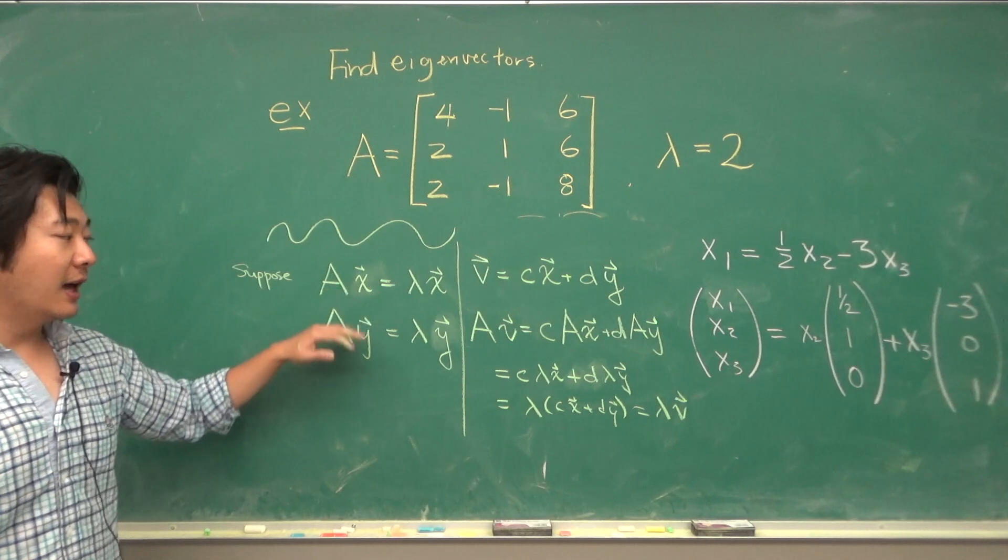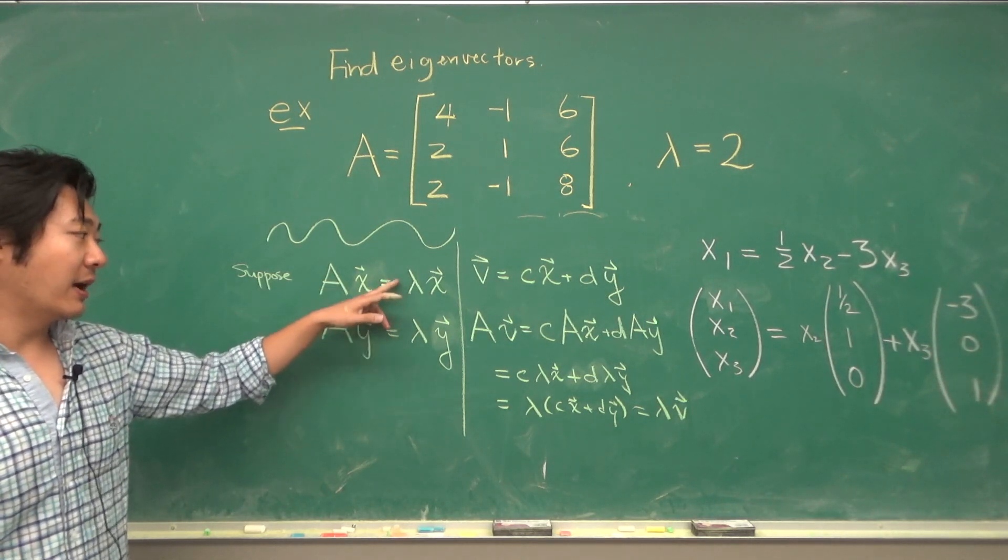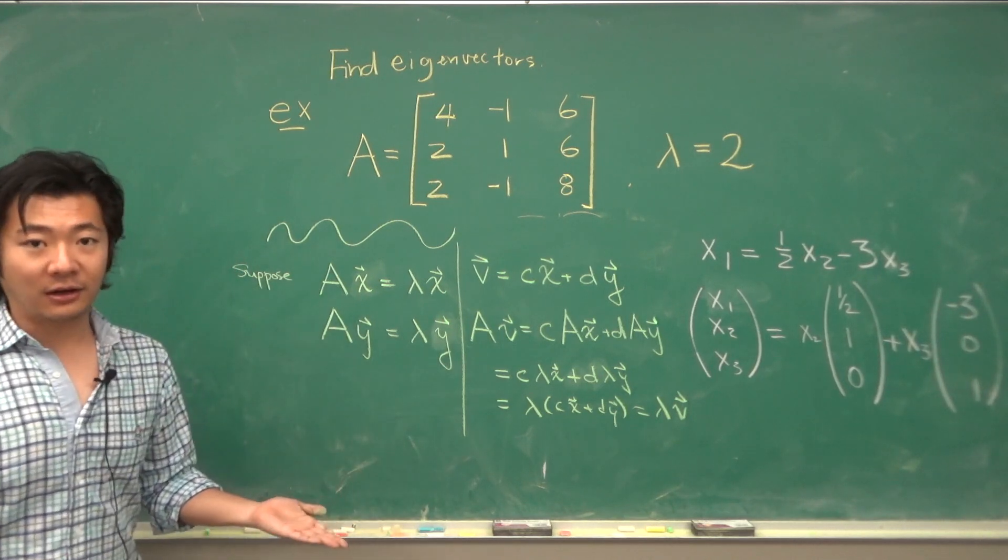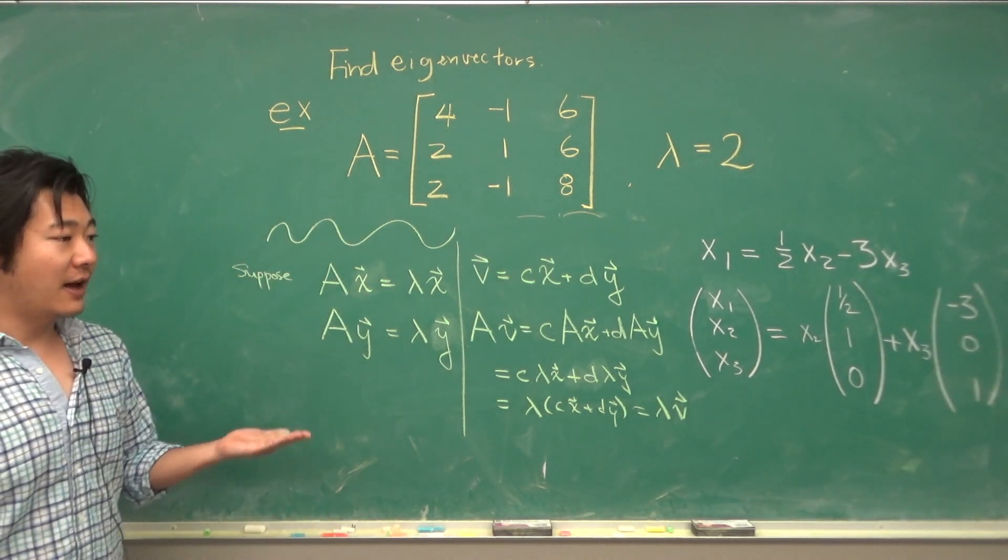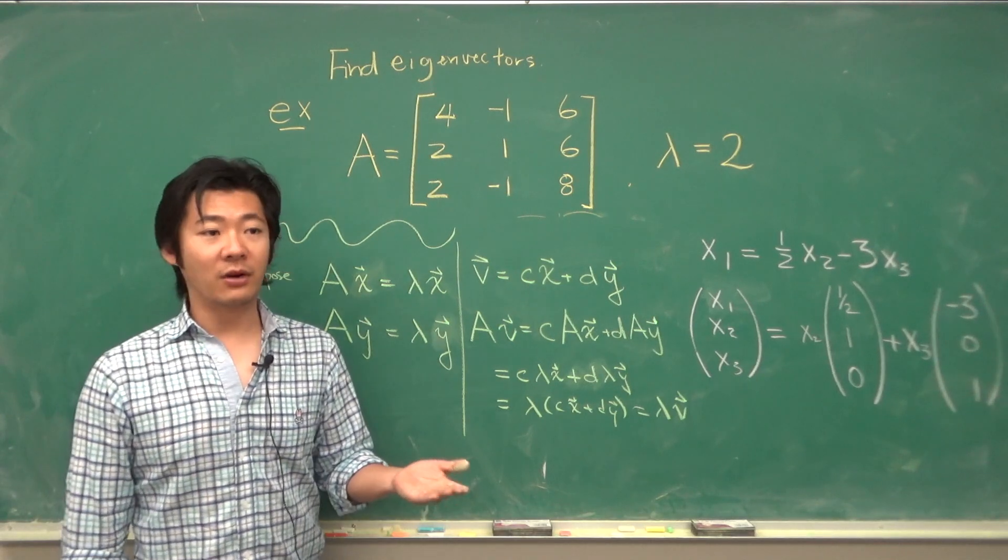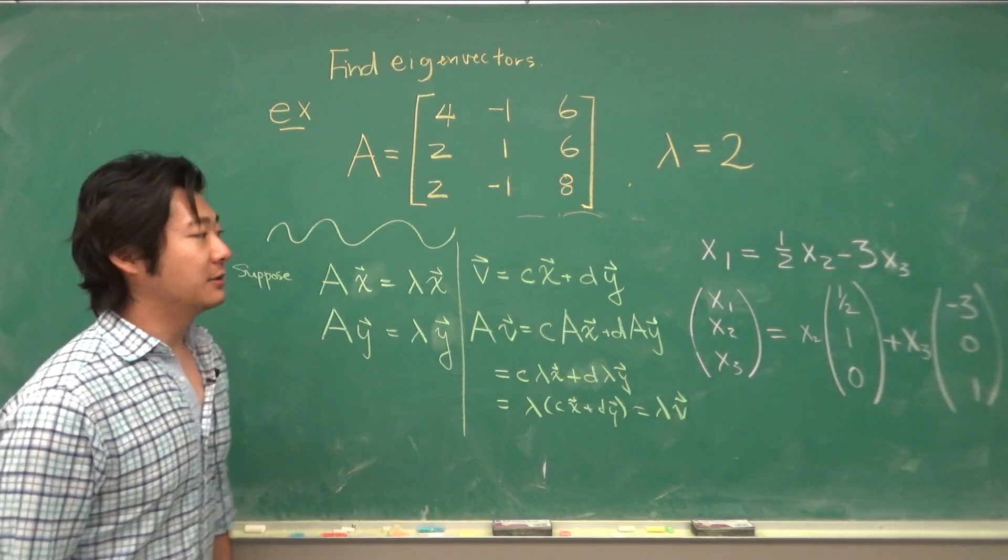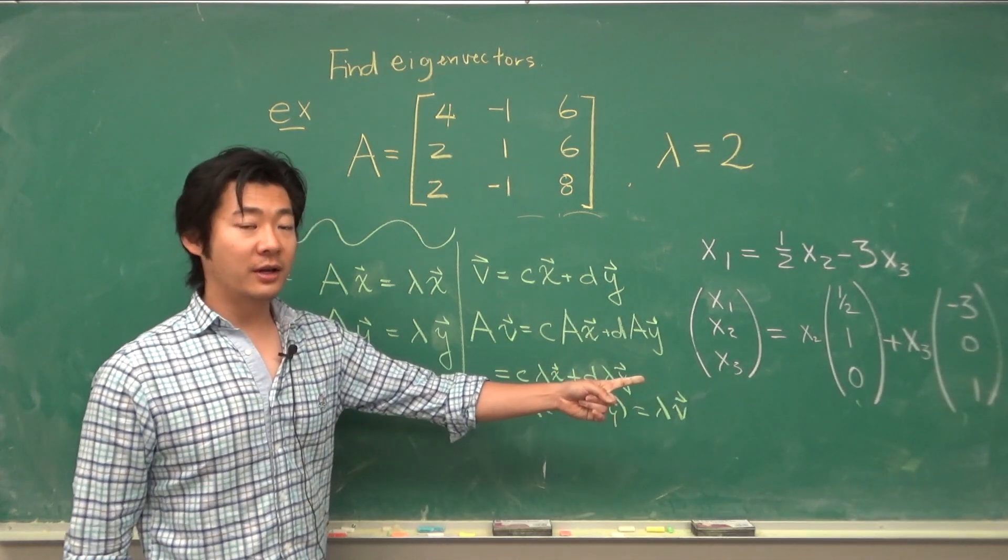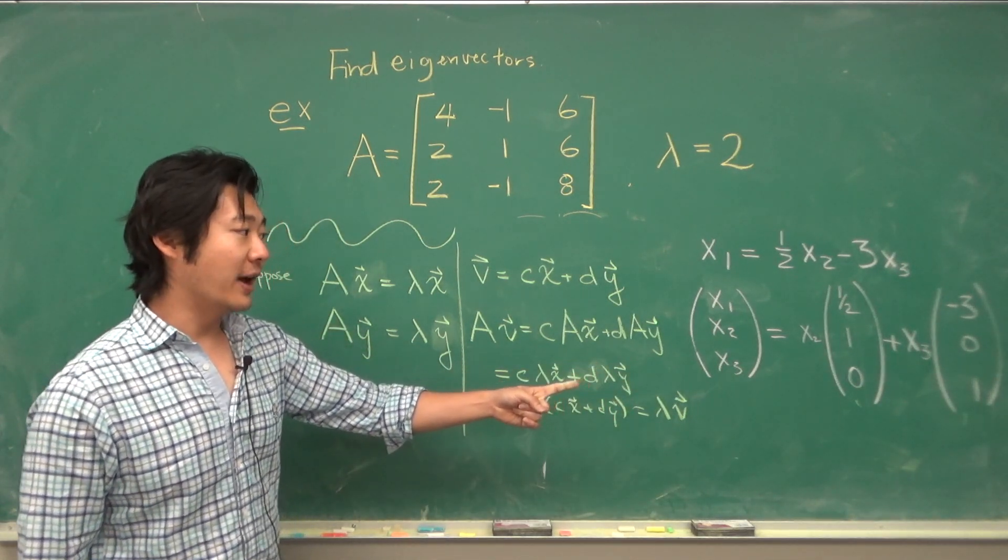So if you have two eigenvectors corresponding to the same eigenvalue, then you can take their linear combination, and it's still an eigenvector. In other words, the set of eigenvectors corresponding to the same eigenvalue forms a subspace. And so in this example, these two vectors will form a basis for your eigenspace.